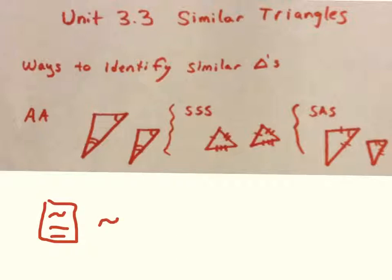Similarity is done by this little tilde, it's a little wiggly sign here. If two triangles are similar, that means that they're not necessarily the same size, but they do have the same general shape.